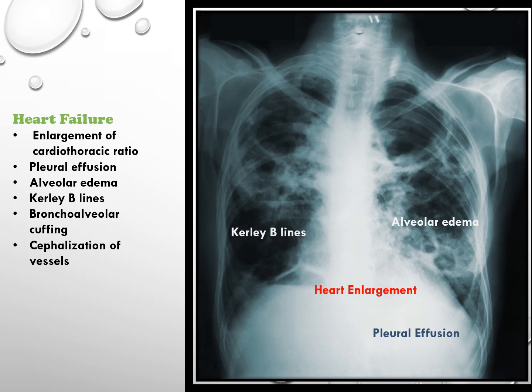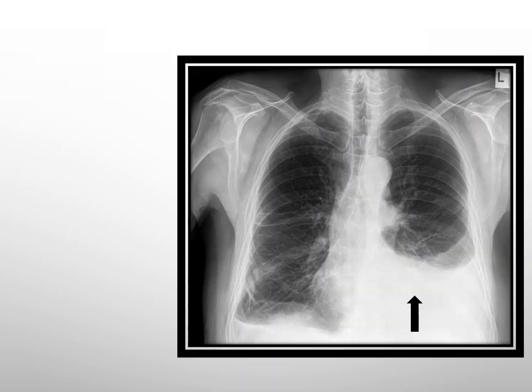Peribronchial cuffing suggests an accumulation of fluid in the small airways. Cephalization of vessels demonstrates a redistribution of blood in the vessels, often seen in heart failure.